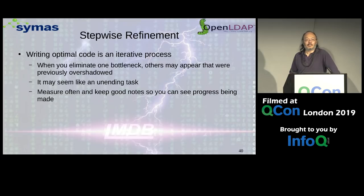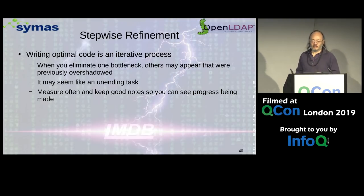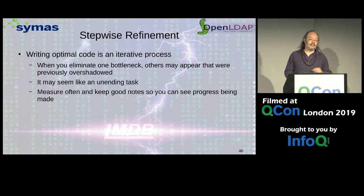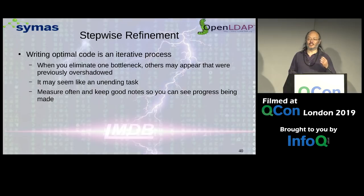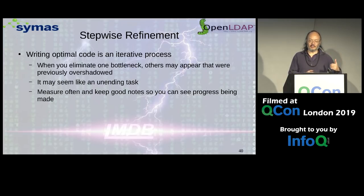You eliminate one problem and something else pops up. Sometimes it's amazing — how did this big problem hide from us so long? It's a matter of changing the dynamic of your program. As you fix certain problems, other timing relationships change, and things that weren't a problem before become more of one. The way to survive this from a morale standpoint is to keep good notes and show that you have been making progress over time. Those notes have to include test parameters, profile results, all the things that give you documentation — 'we changed this function, we eliminated this bottleneck.'